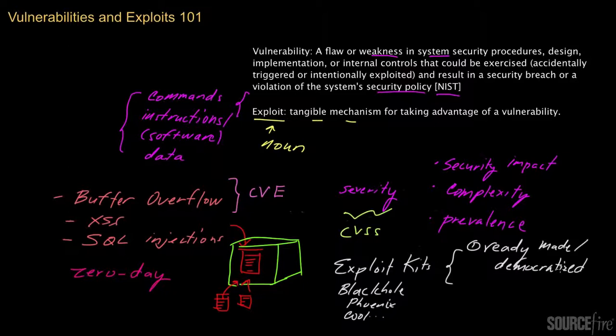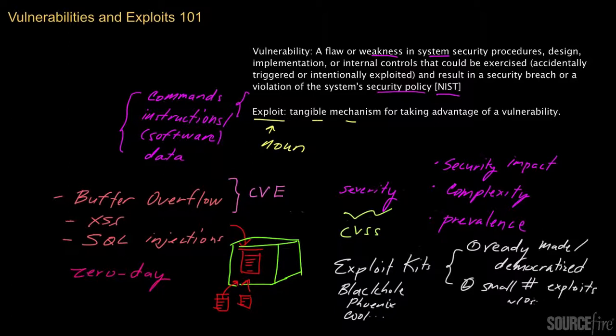These kits actually provide access to a relatively small number of exploits. People often think these kits might have thousands, but really it's much smaller — typically in the range of maybe half a dozen to a dozen, so really just tens of exploits in general. Higher-end versions may include additional exploits, such as zero days or lesser-known ones. But this goes to show that an attacker really only needs a handful of particularly powerful exploits.